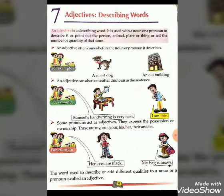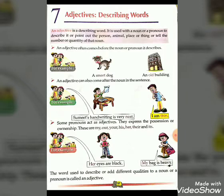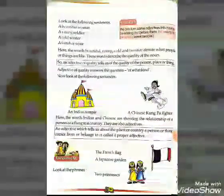The word used to describe or add different qualities to a noun or a pronoun is called an adjective. This is very important to know.